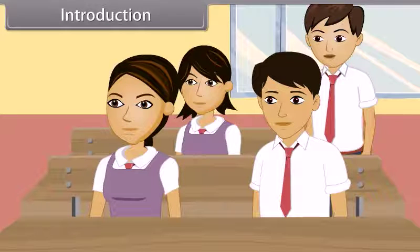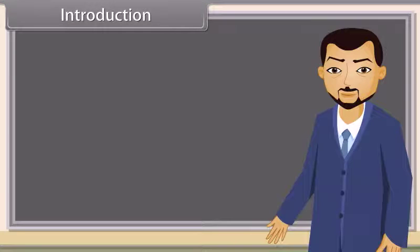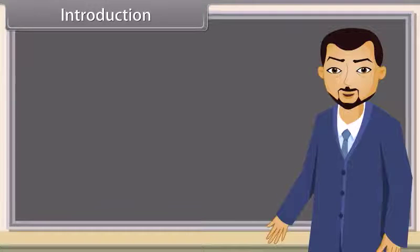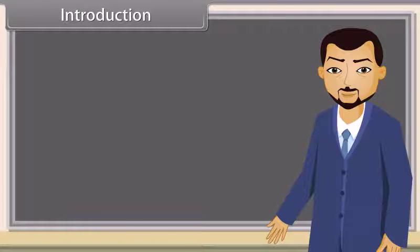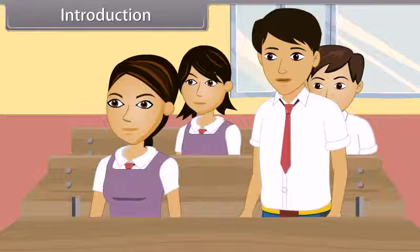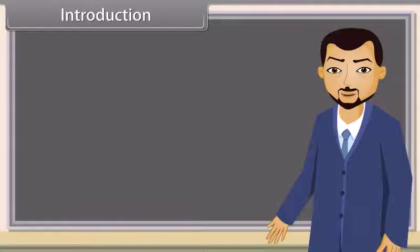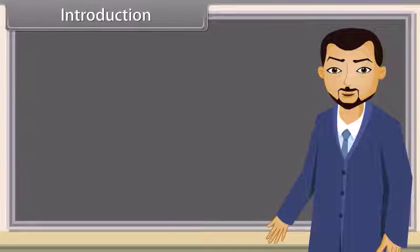Sir, what do we get from the sunlight? Good question, Raman. We get vitamin D from the sunlight. It encourages the absorption and metabolism of calcium and phosphorus in our body. Sir, what happens if our body cannot get vitamin D? Due to deficiency of vitamin D, many serious diseases can occur like rickets, obesity, heart disease or high blood pressure. Students, today we will study about all these topics in our chapter, Biomolecules.